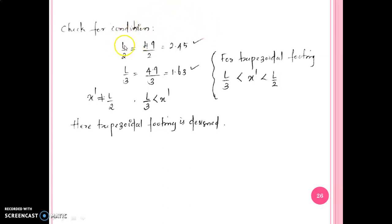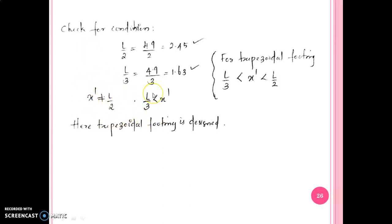We check the condition for x-dash equal to L by 2. If this condition is satisfied, we can adopt a rectangular footing instead of a trapezoidal footing.